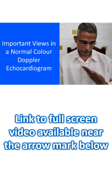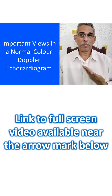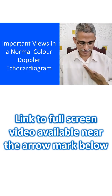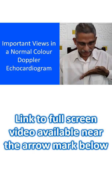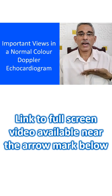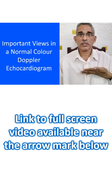For example, this is the parasternal long axis view. It goes from the base of the heart to the apex. And if you place it the other way round, this becomes the parasternal short axis view. These are the two commonly employed views initially.